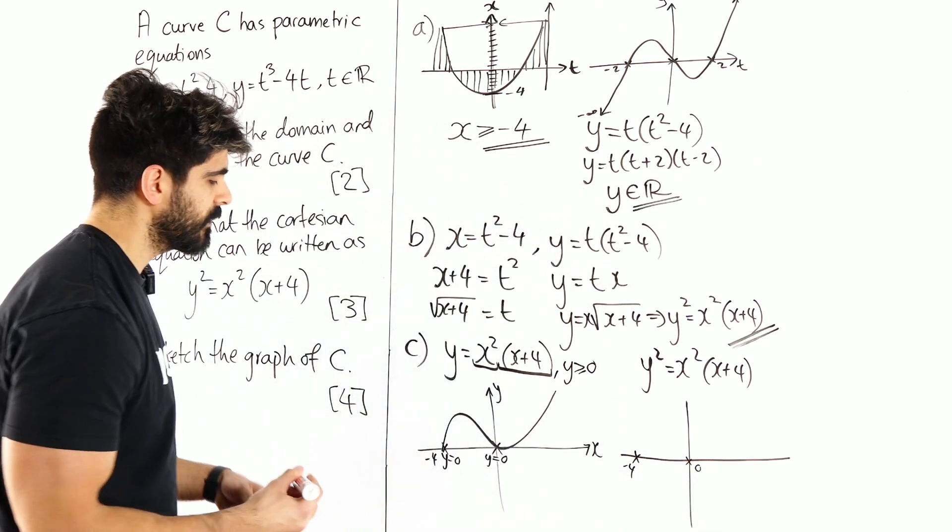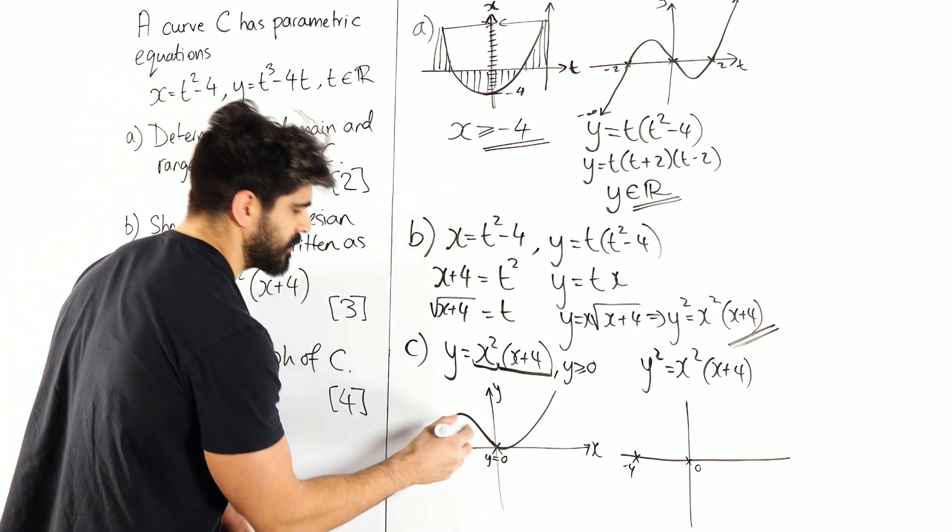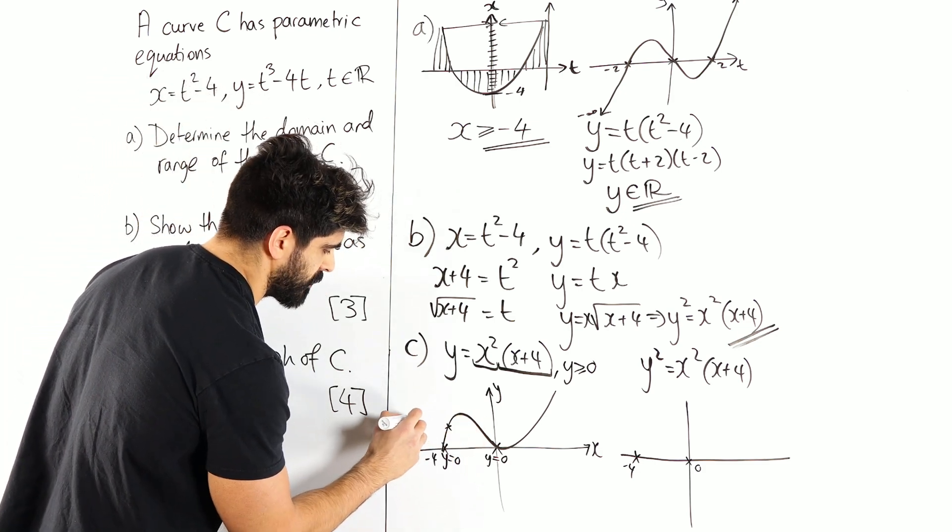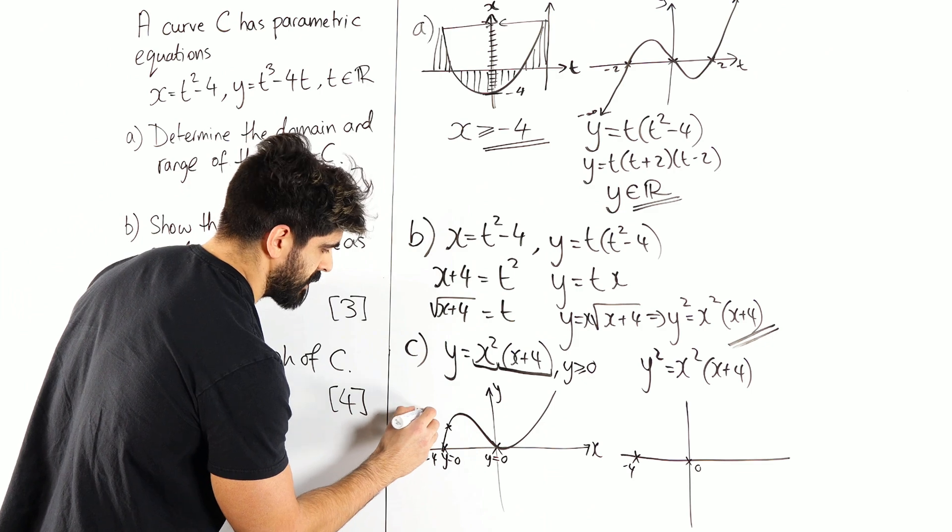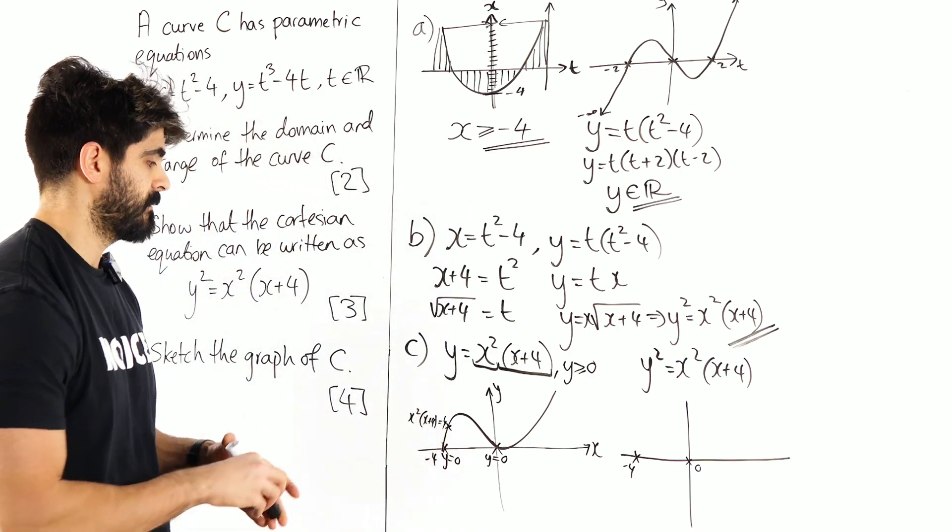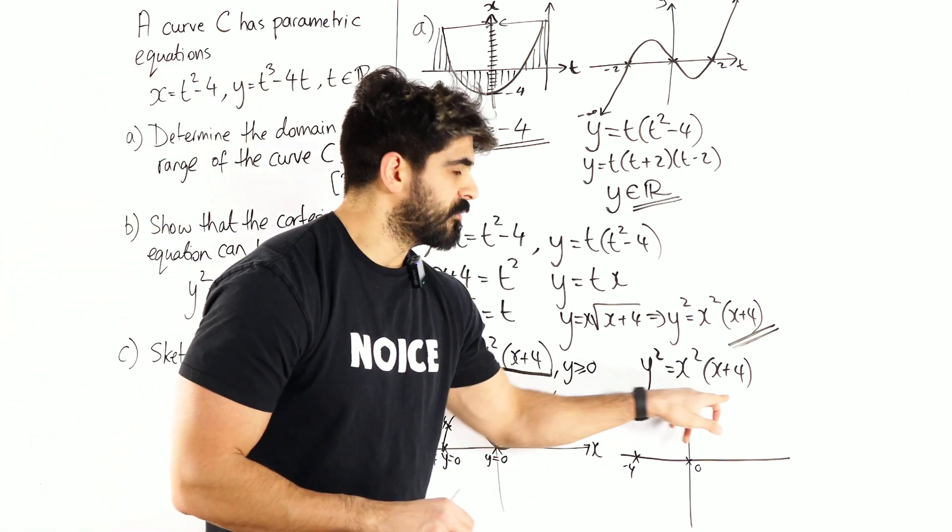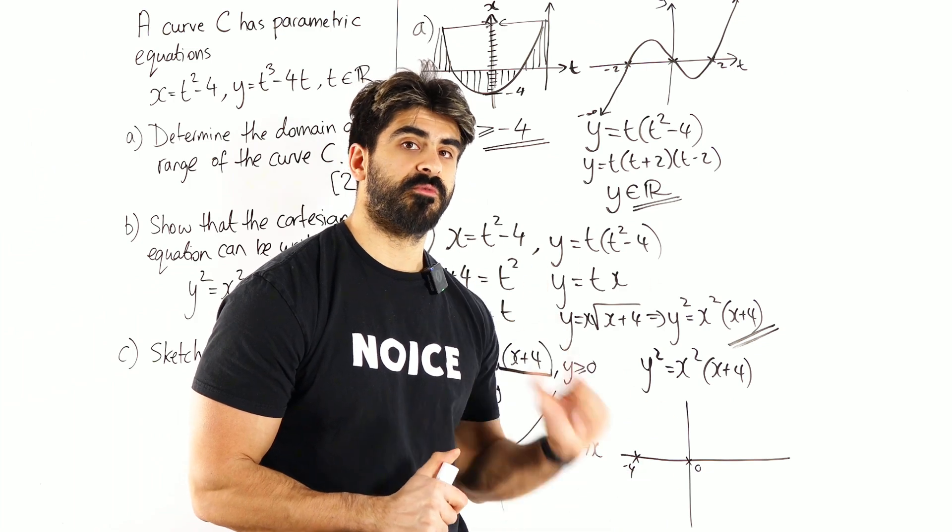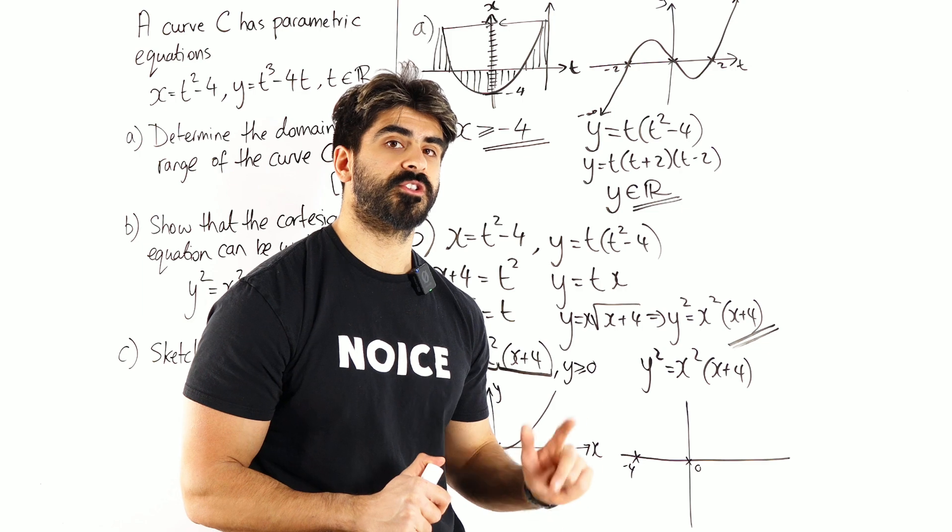However, what happens when the function of x squared x plus 4 is 4, for example? If this value here is 4 and you square root it, you're going to get plus or minus 2.